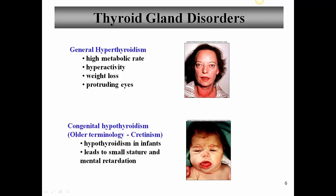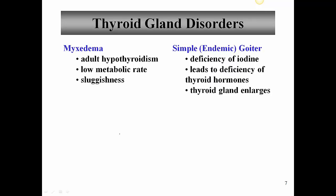A low level of thyroid hormones is known as hypothyroidism, and there are two types. The one in children is known as congenital hypothyroidism, sometimes also called cretinism, which leads to small stature and mental retardation - highlighting the effects of thyroid hormone on growth and development. There is also an adult form called myxedema, which leads to a low metabolic rate, sluggishness, puffy eyes, edema, and mental sluggishness.